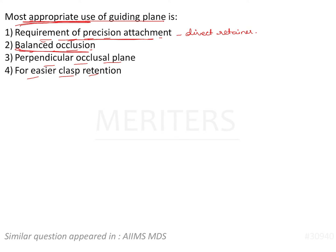Balanced occlusion is not the answer because the guide plane is prepared on the proximal surface and has nothing to do with occlusion. Perpendicular to the occlusal plane — while the guide plane is indeed perpendicular to the occlusal plane, this is a feature, not a use. So that option has no such significance as a use of the guide plane.